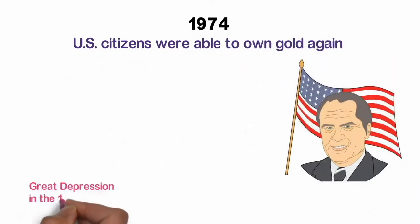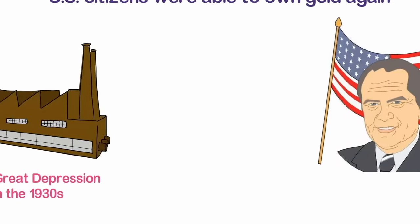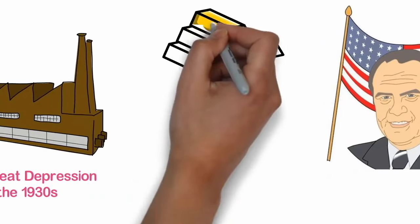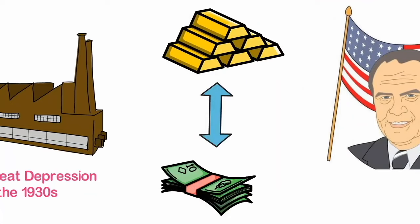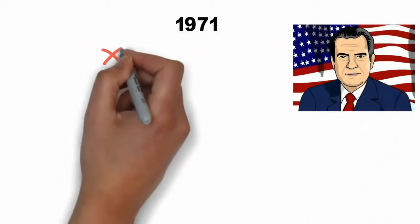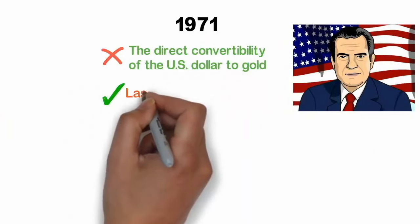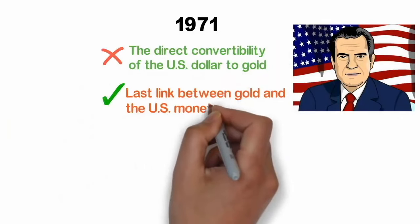But during the Great Depression in the 1930s, industrialized nations stopped using the gold standard, severing the symbiotic link between the value of gold and the value of money. In 1971, President Richard Nixon unilaterally canceled the direct convertibility of the US dollar to gold, severing the last link between gold and the US monetary system.